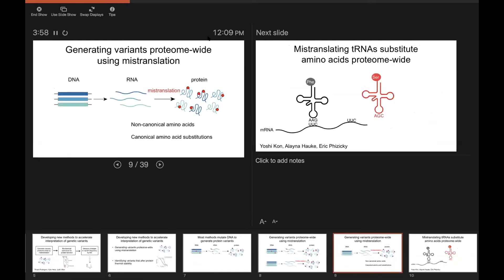Now, there are multiple ways that you can harness mistranslation to diversify the proteome. The VN lab has worked quite a bit on introducing non-canonical amino acids that are incorporated by the native translational machinery. And I'm not going to talk about any of that work today.